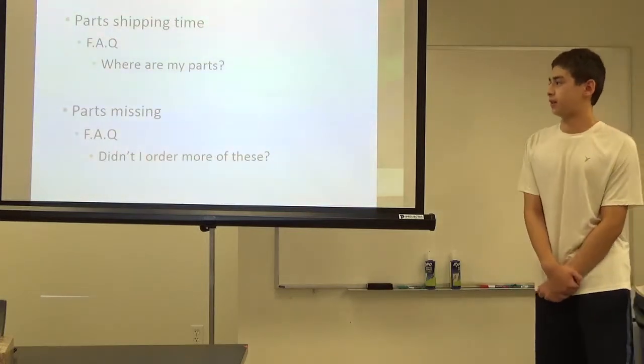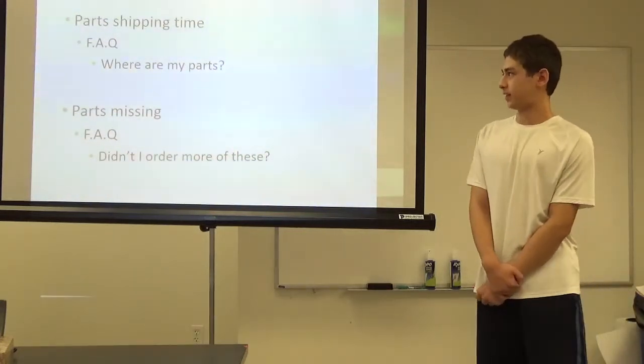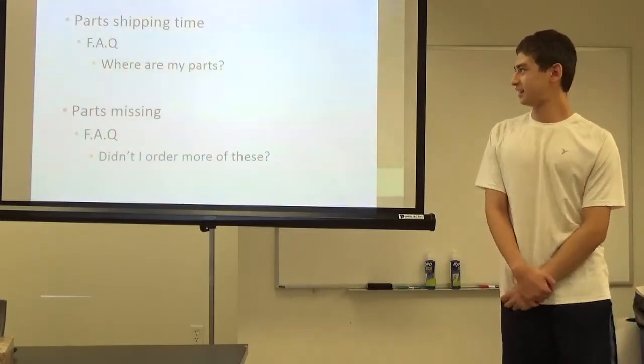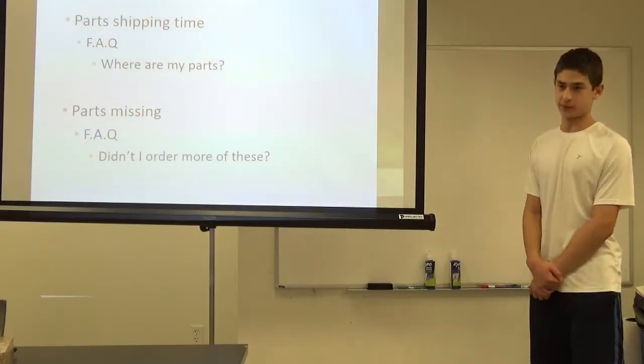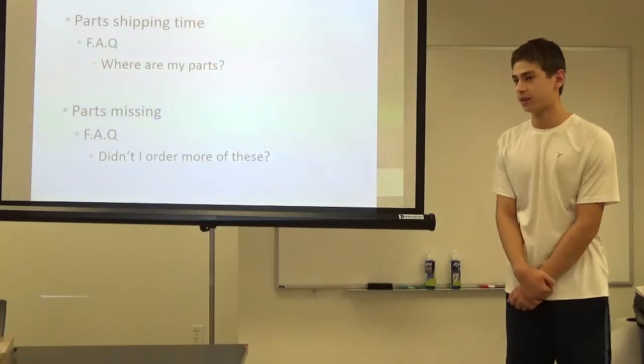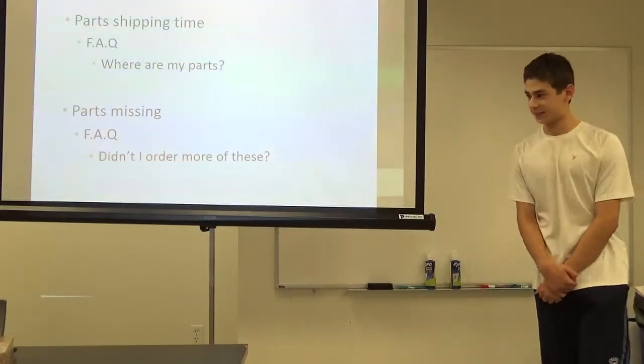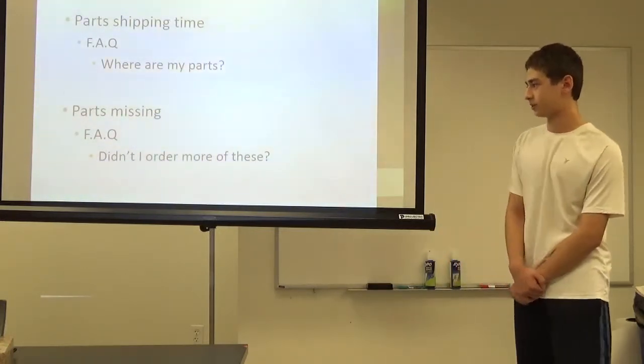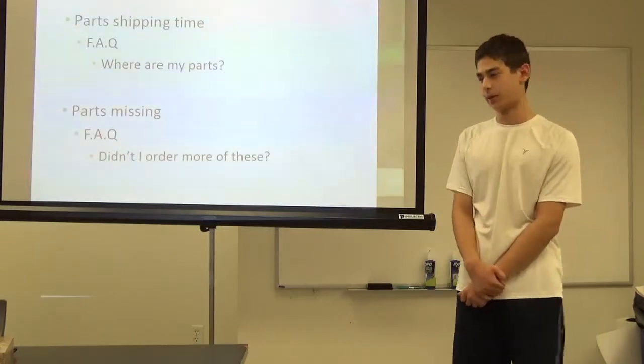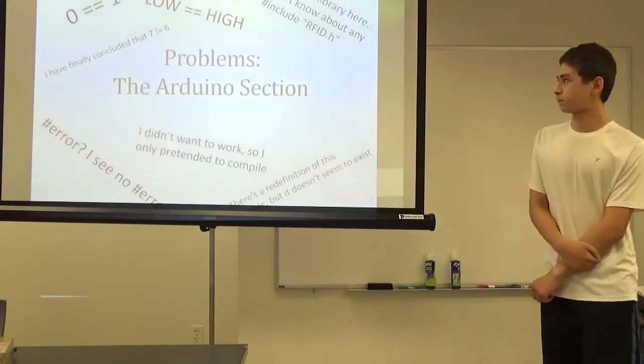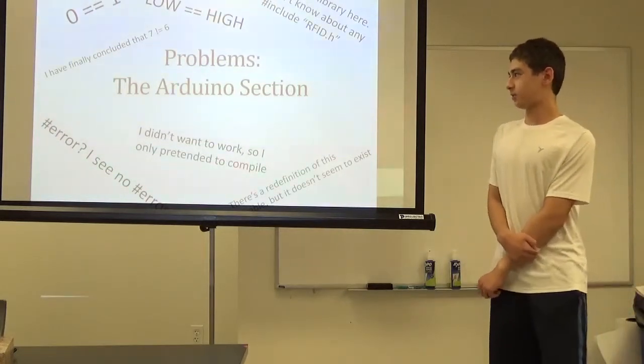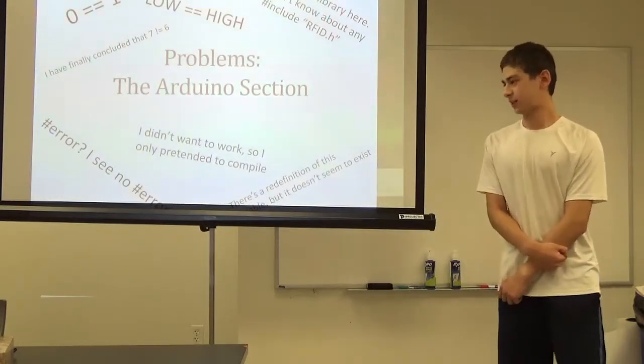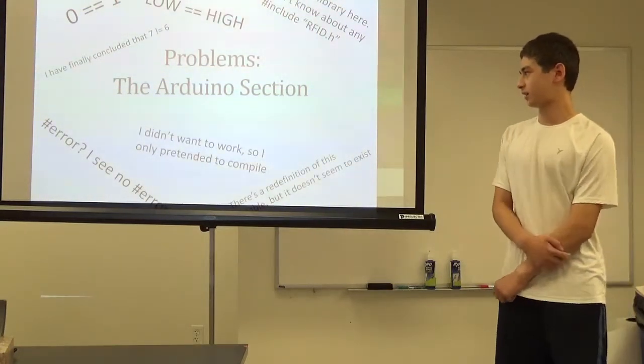Some problems I ran into were the parts shipping time. And the most frequently asked question was, where are my parts? I only received one RFID tag, even though I ordered three. My shield still hasn't come in yet, so I'm still waiting on that. I had two tags missing. I only got one after I ordered three. Where are my parts? I had so many problems with the Arduino that I decided to make an entire section dedicated to it. I present to you the problems with the Arduino section.